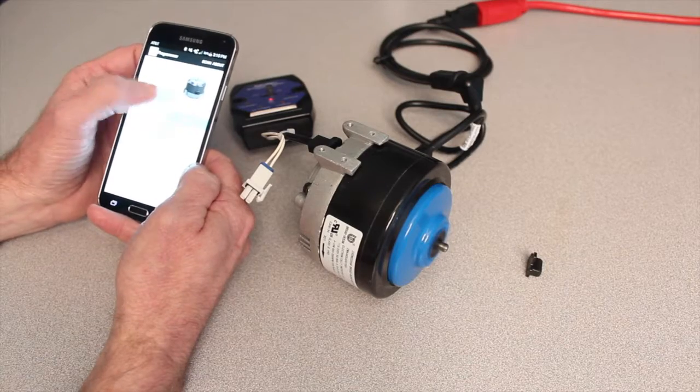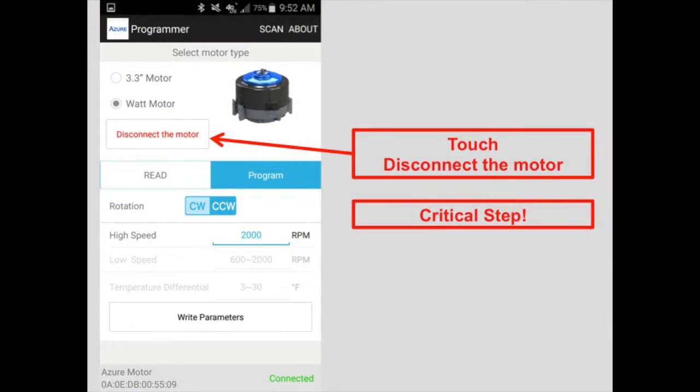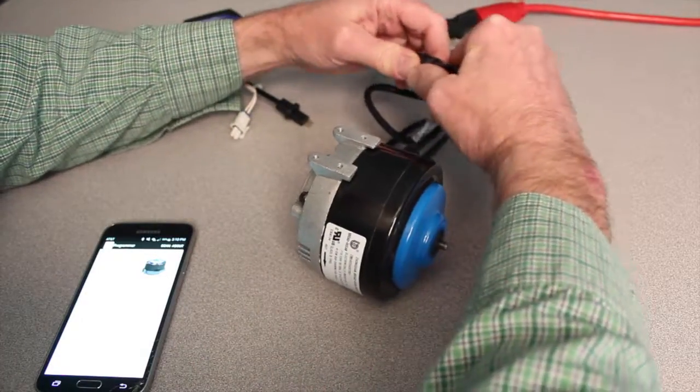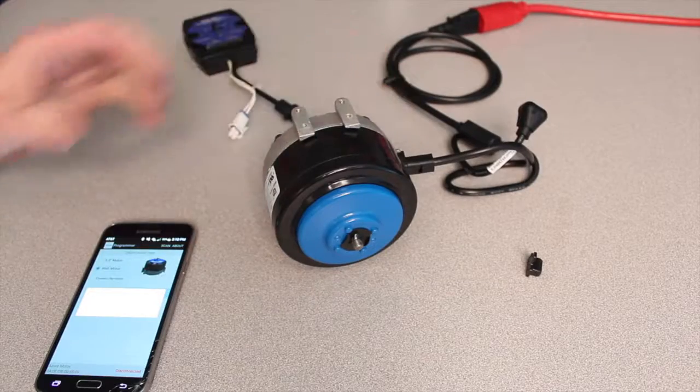Now we're finished, so we'll disconnect the motor. Turn off the module. Unplug it and remove the 115 volts. The motor is now programmed.